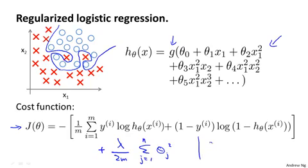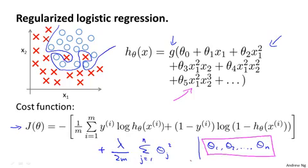And this has the effect of penalizing the parameters theta 1, theta 2, and so on, up to theta n from being too large. And if you do this, then even though you're fitting a very high-order polynomial with a lot of parameters, so long as you apply regularization and keep the parameters small, you're more likely to get a decision boundary that looks more reasonable for separating out the positive and negative examples. So when using regularization, even when you have a lot of features, the regularization can help take care of the overfitting problem.